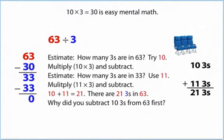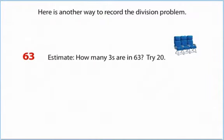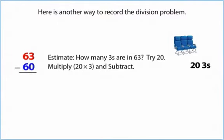10 times 3 equals 30 is easy mental math. Here is another way to record the division problem. Estimate how many threes are in 63, try 20. Multiply 20 times 3 and subtract.